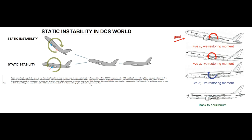The first thing is we've got to teach the people who don't know what static instability is outside of DCS. Before I unleash Tate on this, let me quickly explain the diagram here. We've got this aircraft here — it is statically unstable, meaning static instability.